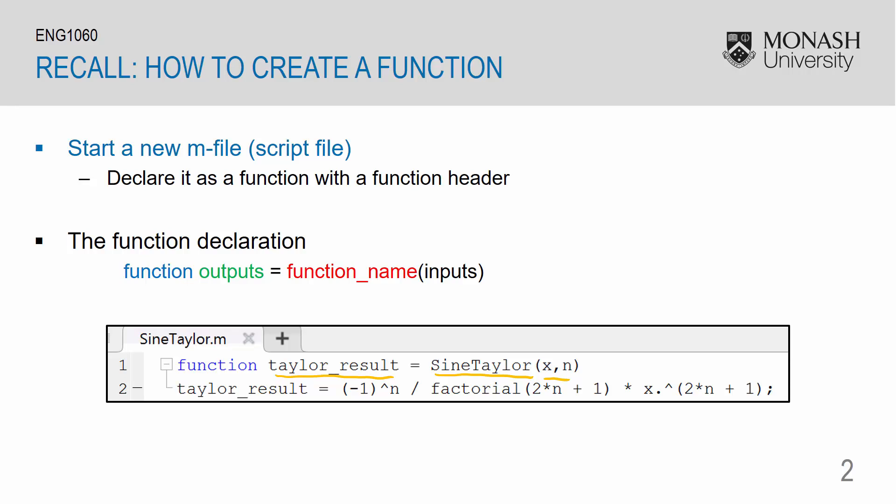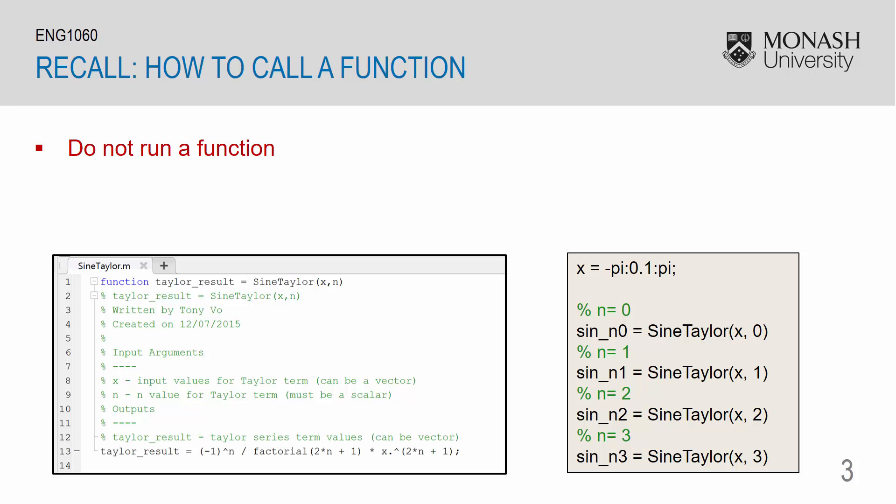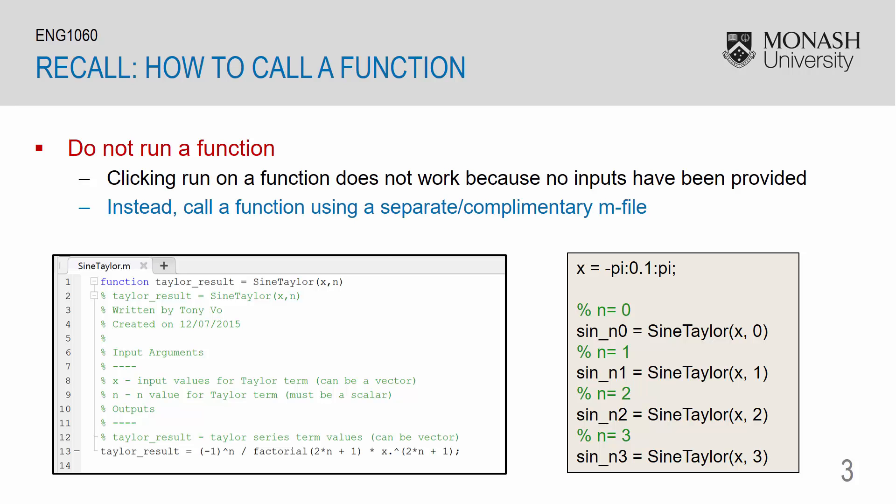In this video I will focus on how we can create multiple outputs. Remember that you cannot click run on a function file. Clicking run on a function does not work because no inputs have been provided to it. Instead, you must call a function using a separate or complementary m-file. So the function on the left here is our function file, and the file on the right is our m-file, which calls the sinTaylor function.